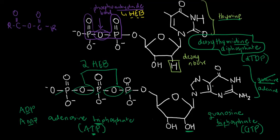One last note: notice that the nitrogen from the five-membered ring — which is N9 — is the one which is attached to the sugar. This is the case for purines. For pyrimidines, it is N1.